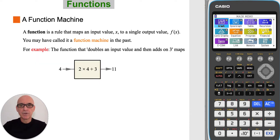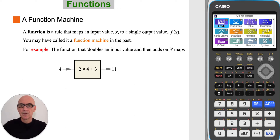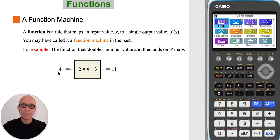A function is a rule that maps an input value x to a single output value called f. You may have called it a function machine in the past. In the example shown, the function that doubles an input value and then adds on 3 would map 4 to 11.